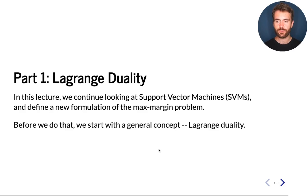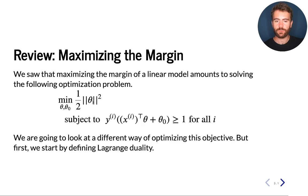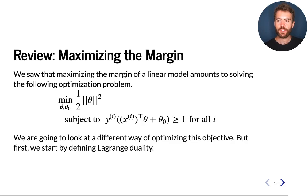Recall that in the earlier lectures, we looked at support vector machines and defined the SVM as the solution to a number of optimization problems — one of them being a constraint optimization problem. We formulated the SVM as solving a constraint optimization problem, and Lagrange duality is a set of interesting properties of constraint optimization problems that we're going to look at first in a general way, and then apply to support vector machines in the next video.